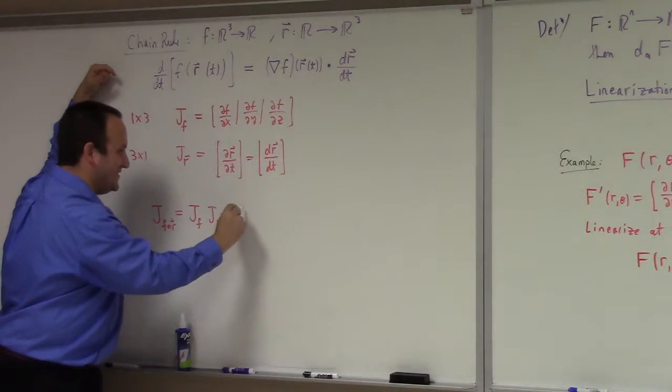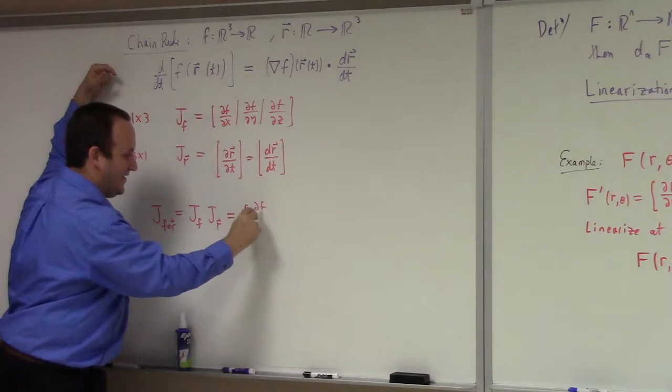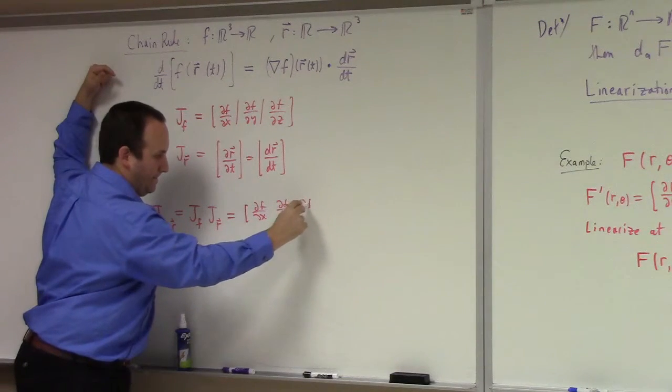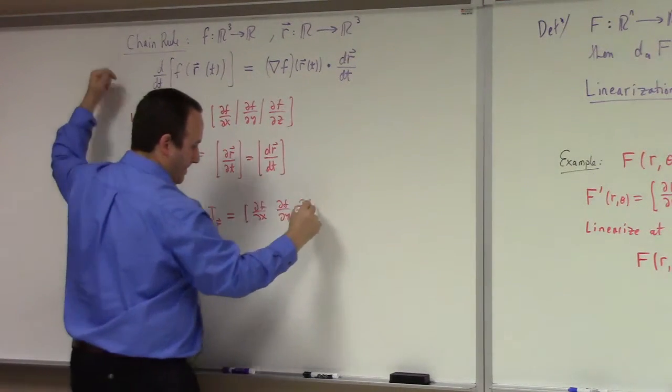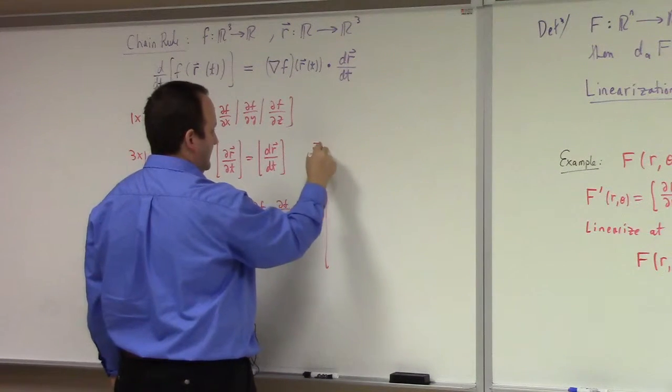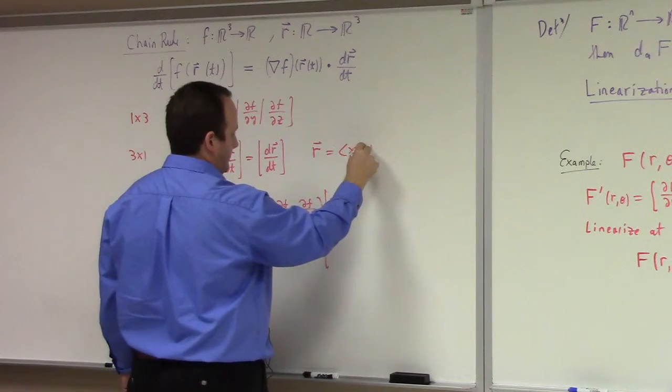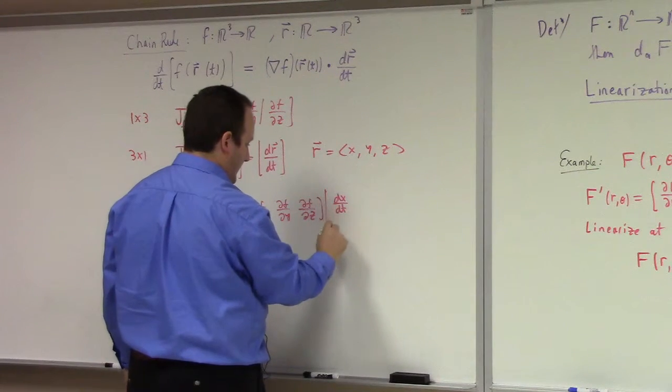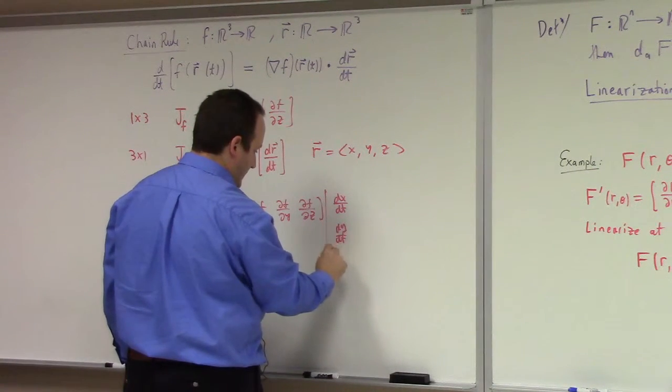We just... See what that is? And I guess if I say R is X, Y, Z. So then you've got dx/dt, dy/dt, dz/dt.